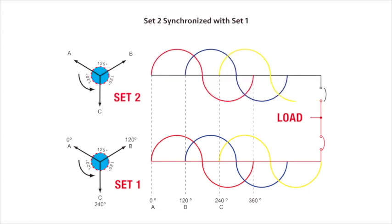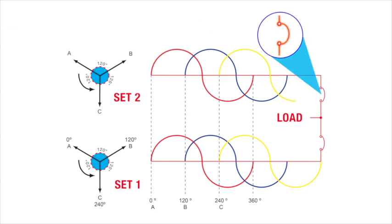Set two is now synchronized with set one and AC voltages are now in phase with each other. The breaker on set two closes to the bus and both sets are now supplying power to the load in parallel.